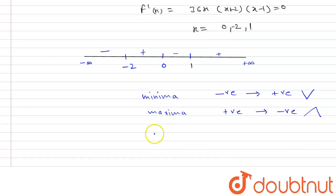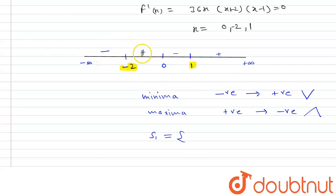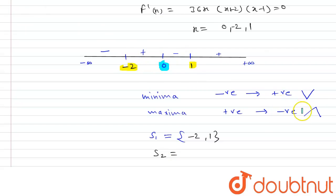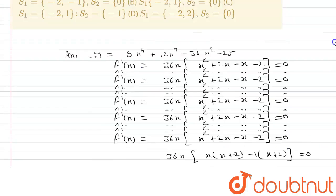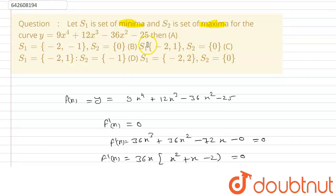S1 is the set of minima, where f'(x) changes from negative to positive. That gives S1 = {-2, 1}. S2 is the set of maxima, where f'(x) changes from positive to negative, which occurs only at x = 0. So S2 = {0}. Checking the options, option B — S1 = {-2, 1} and S2 = {0} — is the correct answer. Thank you.